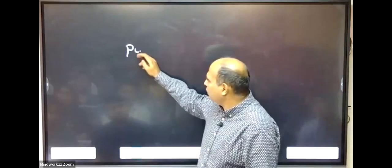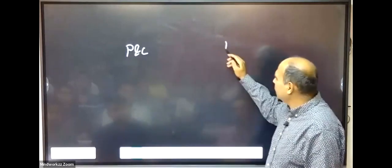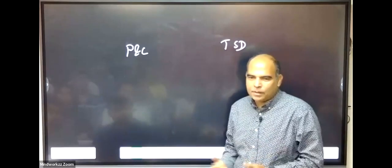When you do a chapter in quants, if you're studying permutation combination and you're studying time-speed-distance, why do we keep these two chapters separate?